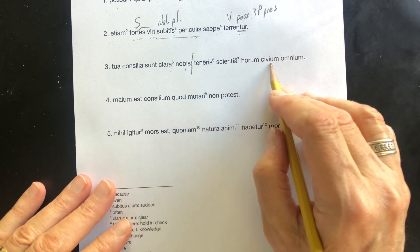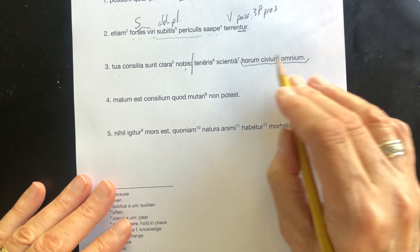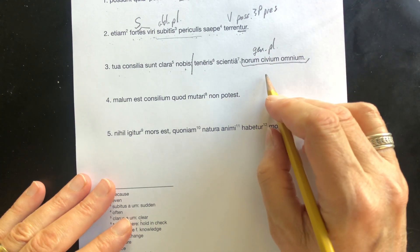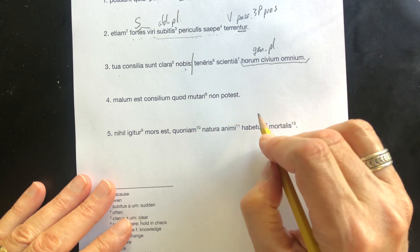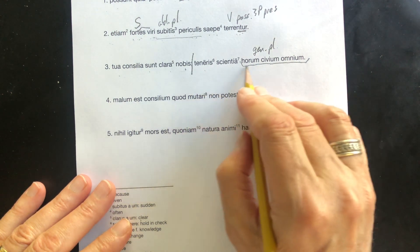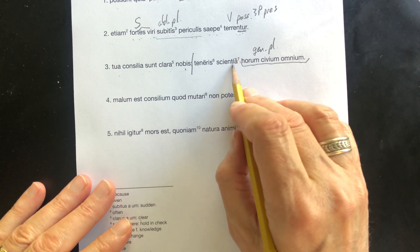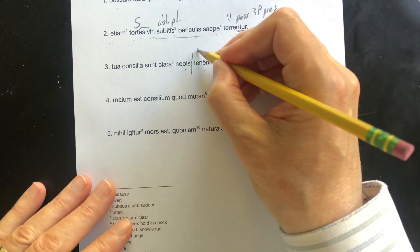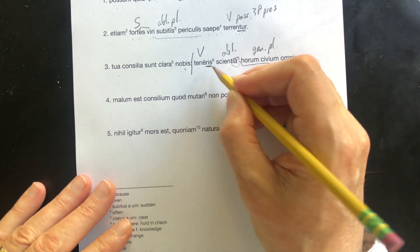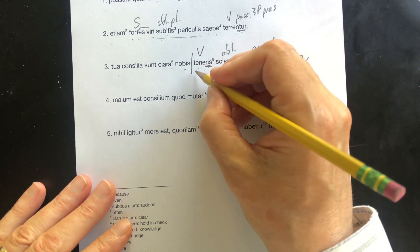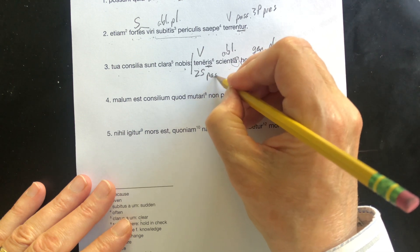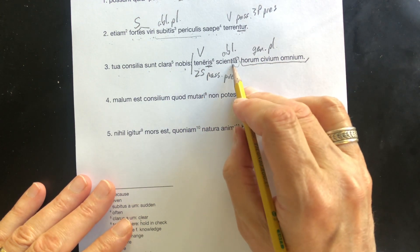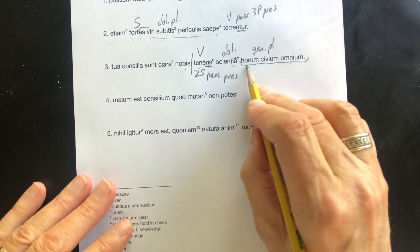Teneris scientia horum civium omnium. Now, there is a similar sound going on here. Horum civium omnium. This is genitive plural all the way along here, of all these citizens. All right, let's see what else is going on. Teneris scientia. Well, scientia is a noun, and with the macron over the 'a', that's an ablative. All right, so that's got to leave that as the verb. Teneris. So that's you, second person singular. It's passive because it's got the passive ending, and it's present. So you are being held in check by the knowledge of all these citizens.